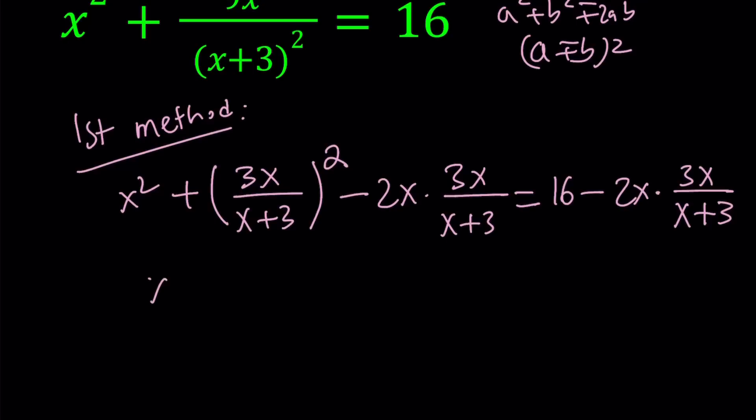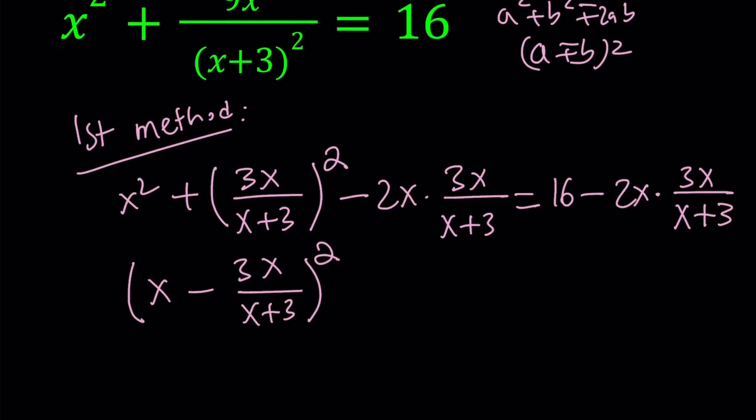So this becomes x minus 3x over x plus 3 in parentheses. That is our quantity squared. And on the right hand side, let's go ahead and simplify.